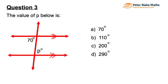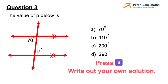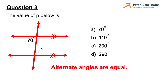Question 3. The value of P in the diagram below is... Alternate angles are equal, and that 70 and that P are in the alternate positions. They're on either side of the transversal, and they're in between the two parallel lines. So they're equal to each other, both in the same positions. So P will equal 70.